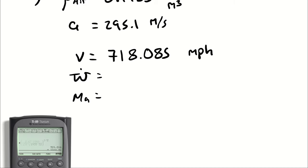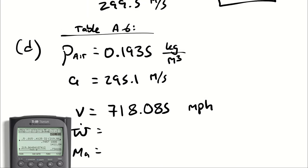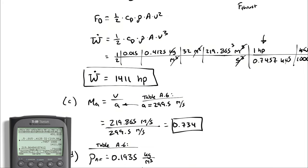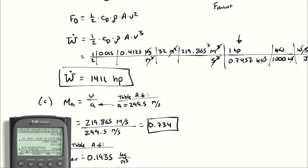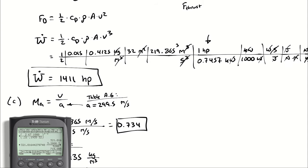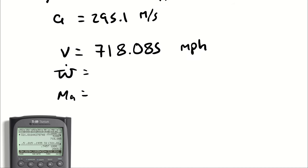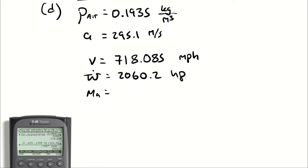Next calculation was the power required, that had been 1411. We're just going to go in and change the density and velocity. Instead of 219.8648 we are using 321, and then I change the density as well from 0.4125 to 0.1935, and I get 2060. The engine is going to have to output 2060 horsepower to maintain flight at that altitude.